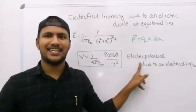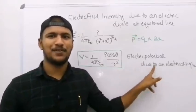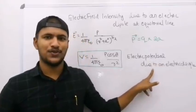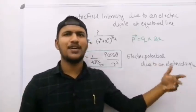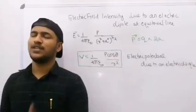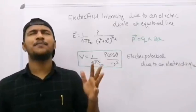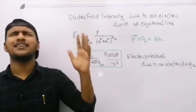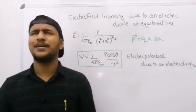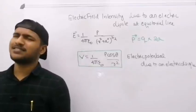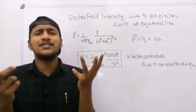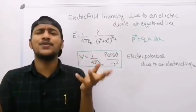Electric potential due to a dipole. V is equal to 1 by 4 pi epsilon 0, P by r square plus a square all raised to 3 by 2.